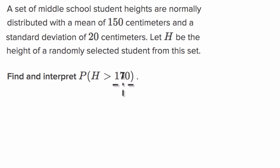So let's first visualize the density curve. It is a normal distribution. They tell us that the mean is 150 centimeters. So let me draw that. So the mean, that is 150.